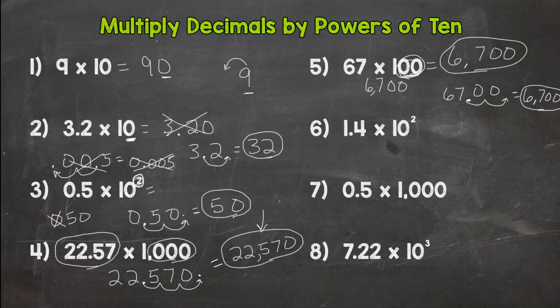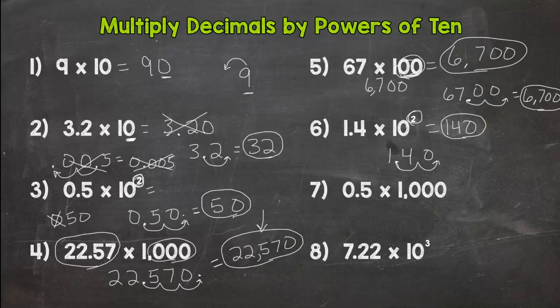Number 6. 1 and 4 tenths times 10 to the second. We have an exponent of 2. So move the decimal twice. One, two. Fill with a 0. Our answer is 140. I always suggest with these problems, you rewrite your decimal underneath. Take your pencil and actually draw out the movements. And then rewrite your answer without that arrow and movement underneath. So write the 140 up there.